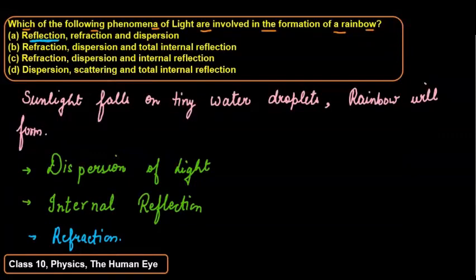So here, first option is reflection - not at all, because that is bouncing back of light, so this could not be the right one. The second is refraction, dispersion, total internal reflection. So C, which is correct: refraction, dispersion, and internal reflection.